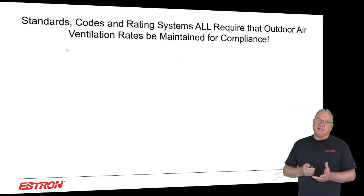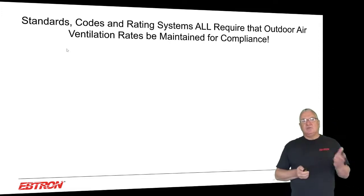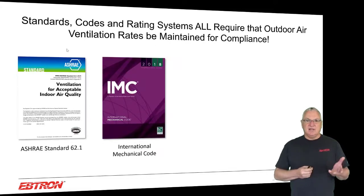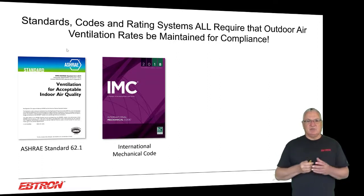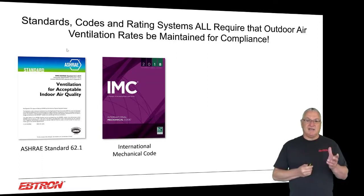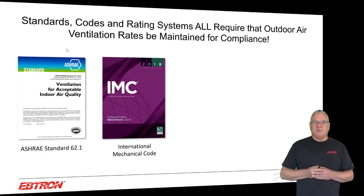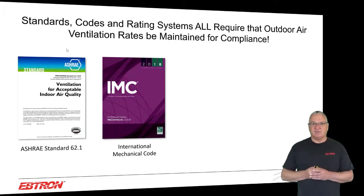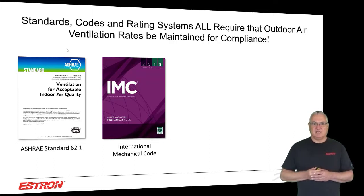When we talk about standards, codes, and rating systems, they all require that outdoor air ventilation rates be maintained for compliance. We have Standard 62, which is ventilation for acceptable indoor air quality — that's the one we really have to go by. And then the IMC, the International Mechanical Code, in one form or another has been adopted in most of the United States. When you look at the ventilation side of the IMC, it's really a strict interpretation of the ventilation rate procedure of Standard 62.